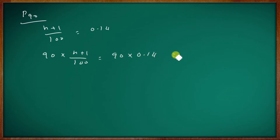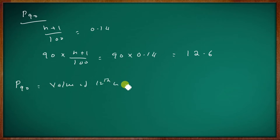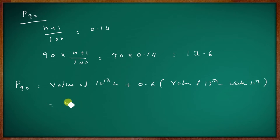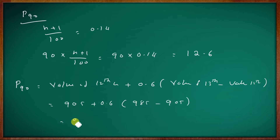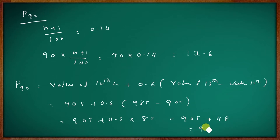P90 equals the value of the 12th item plus 0.6 into (value of 13th item minus value of 12th item). The value of the 12th item is 905, and 0.6 into (985 minus 905) gives 0.6 into 80, which is 48. So P90 equals 905 plus 48, which is 953.